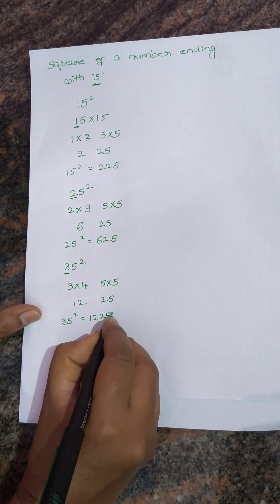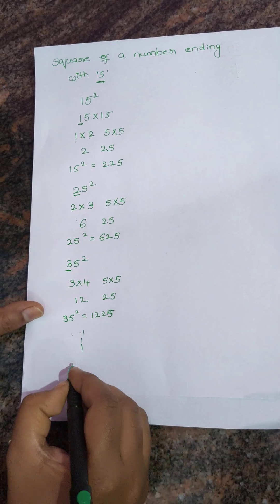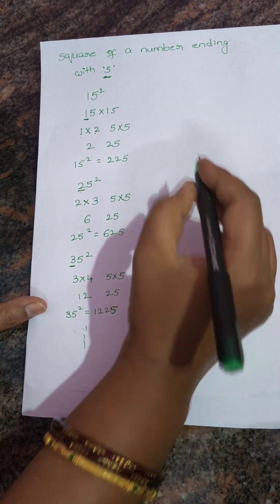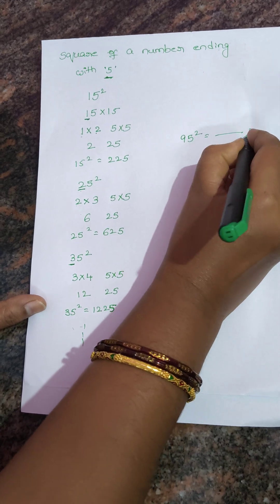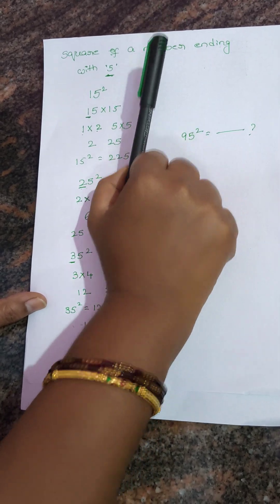By using this method, we can find the square of any number ending with 5. Try with 95 square. If you find the answer, comment the answer. Thank you.